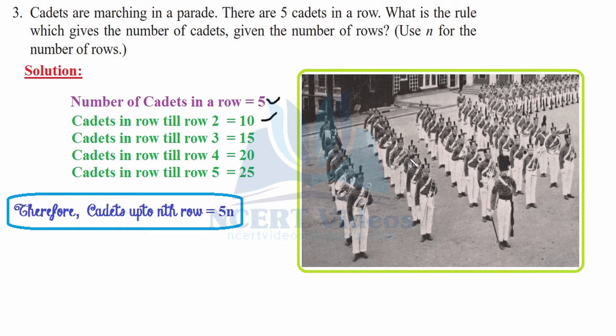For 2 rows, another 5 will be added: 10 plus 5 will be 15. For row 4, another 5 will be added, making 20, and another 5 will be added for row 5. Therefore, cadets up to N rows will be 5N because 5 is the factor here. For example, if we need to get for 6 rows, 5 times 6 is 30. If there are 6 rows, then N will be used as 6. We multiply 6 by 5 to get 30. So 30 soldiers.